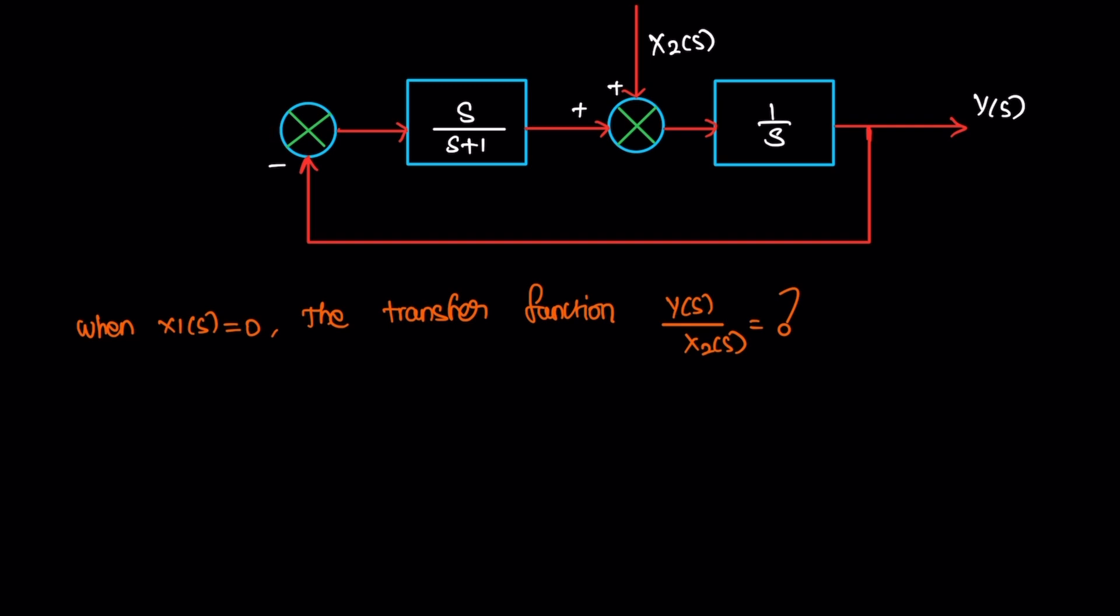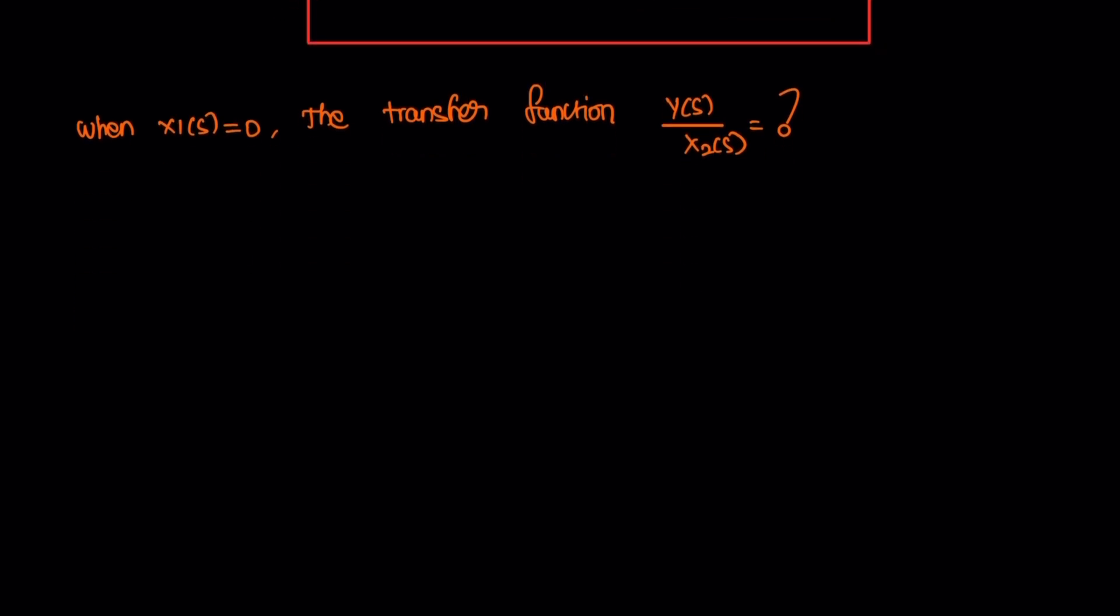For this block diagram, we need to find Y divided by X2. The numerator is the forward path gain and the denominator is the feedback gain. So Y divided by X2 is equal to forward path gain divided by feedback gain.